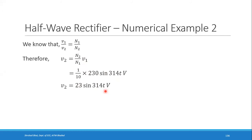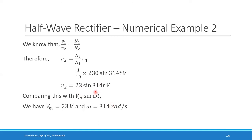This secondary voltage is in instantaneous form Vm·sin(ωt). Comparing, Vm = 23 volts directly — do not multiply by √2 again. The √2 multiplication is only needed when the voltage is given as a plain RMS value, not in this sinusoidal format.